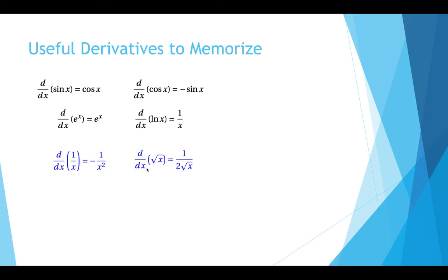The next two you can actually get from the power rule, but they occur so frequently it doesn't hurt to memorize them. The derivative of 1 over x is negative 1 over x squared, and the derivative of square root of x is 1 over 2 times the square root of x.